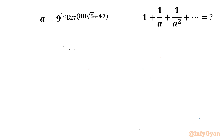Welcome back to InfiGyan friends. In this video we have another very interesting question from algebra. Here we have to evaluate the sum 1 plus 1 over a plus 1 over a squared, up to infinity, where a is 9 raised to the power log of (80√5 minus 47) with base 27.